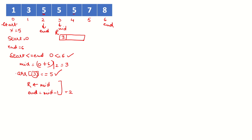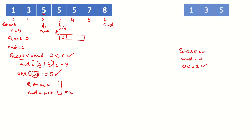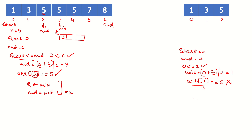Now start is 0 and end is 2. The condition 0 ≤ 2 is true, so we continue. We now have the left side of the list with indices 0, 1, and 2. We calculate the new value of mid. Checking the value at mid against X: the value is 3 which is not X, so this condition becomes false.